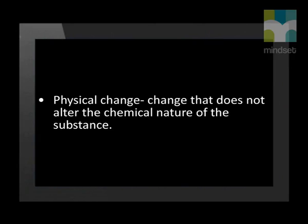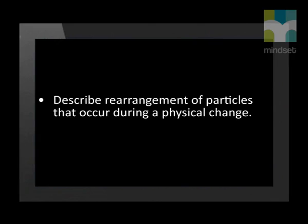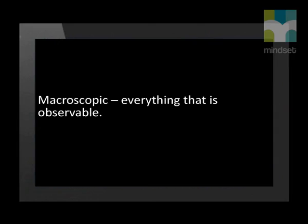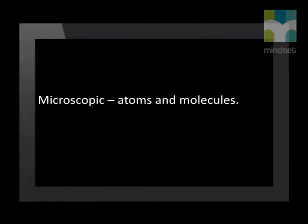In this lesson we will define a physical change as a change that does not alter the chemical nature of the substance. We will describe the rearrangement of particles that occur during a physical change, and look at the macroscopic and submicroscopic changes that occur. By macroscopic we mean everything that is observable — the things we can see, feel, and measure. By microscopic we mean things too small to be observed, referring to the particles that make up matter, such as atoms and molecules. The microscopic world of particles must explain the macroscopic nature of what we observe when physical and chemical changes occur.